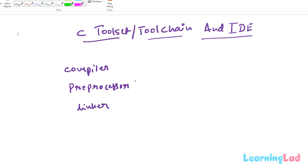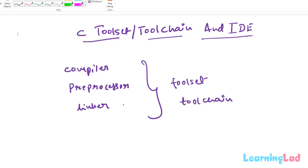The group of all these tools is called the tool set, and they are commonly called the tool chain because these tools are chained together to produce the final executable program. The output of the preprocessor is given to the compiler as input, and then the output of the compiler is given as input to the linker — so all these programs are chained together, which is why they are also called the tool chain.